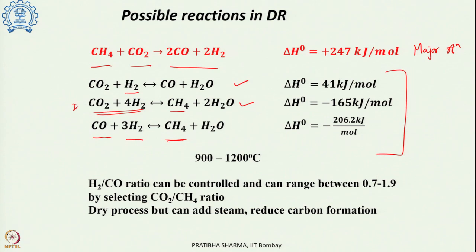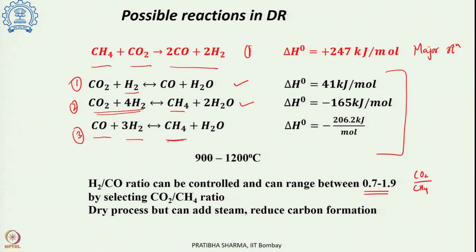The second and third side reactions are methanation reactions where CO consumes hydrogen to produce methane. Dry reforming of methane occurs in the temperature range of 900 to 1200°C. The H2/CO ratio is ideally 1 but can range between 0.7 and 1.9 depending on the CO2/CH4 ratio. Although it is called a dry process, some water is still obtained on the product side.